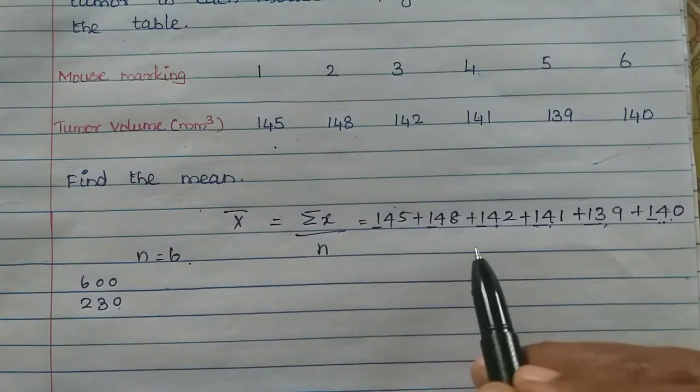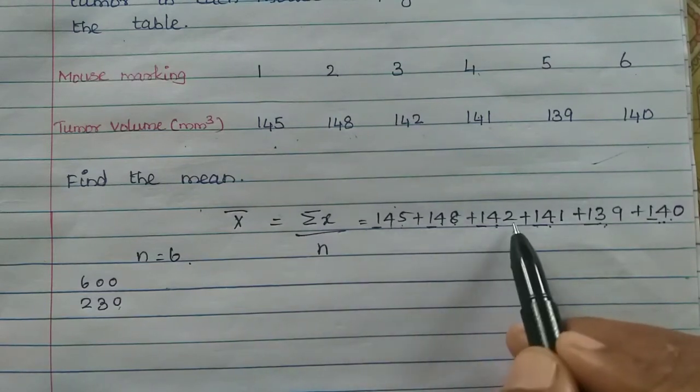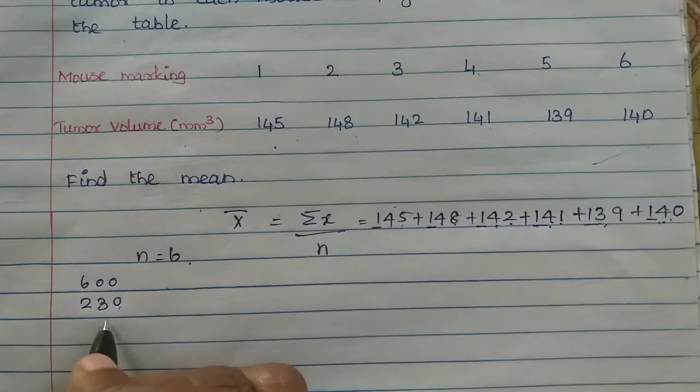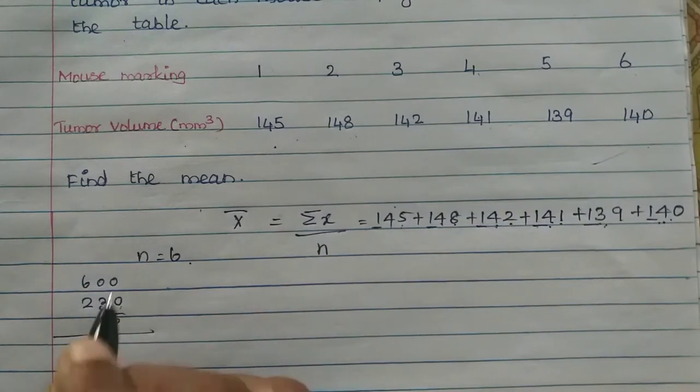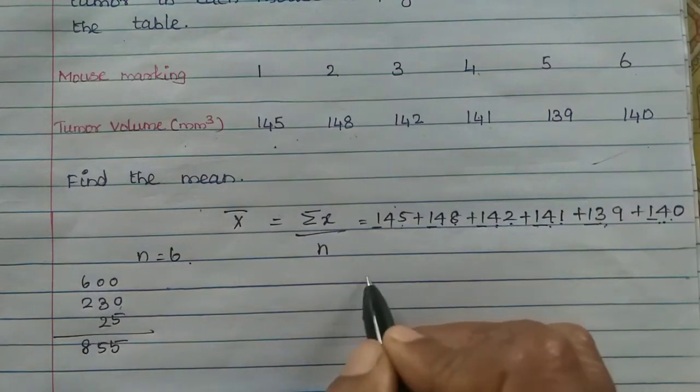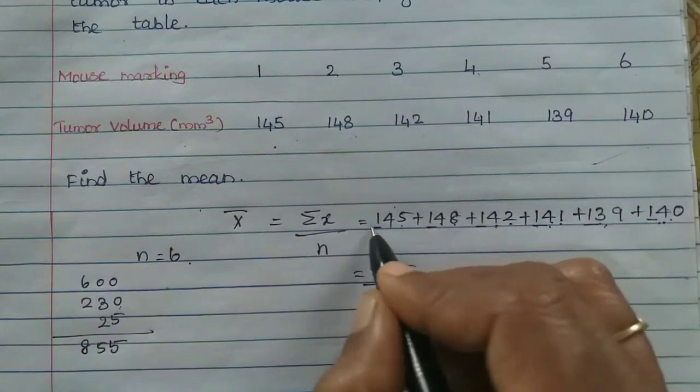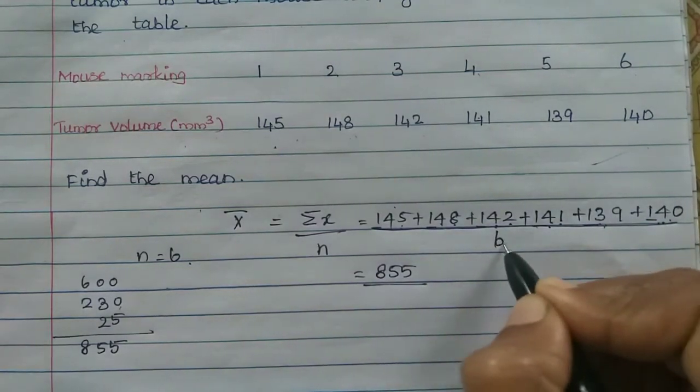In the ones place, 5 plus 8 is 13, plus 2 is 15, plus 1 is 16, plus 9 is 25. So 25. This is where we add. So 855 is there. Now 855 divided by 6, the number of observations.